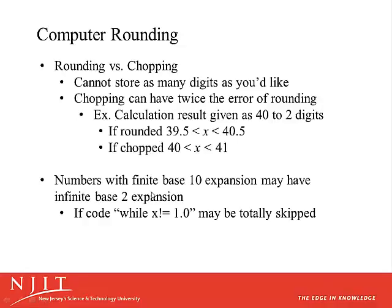We should also note that computers save numbers that we think of as in base 10, but they're using base 2. So if you write a code that says something like, while x is not equal to 1, and you're counting by 0.1 — x is 0.1, then 0.2, and you keep adding 0.1 to x — it might not notice that x is equal to exactly 1 at a certain point, because it's storing it as a base-2 expansion and there's some rounding involved. So we have to be careful in our coding as to how we do these kinds of things.